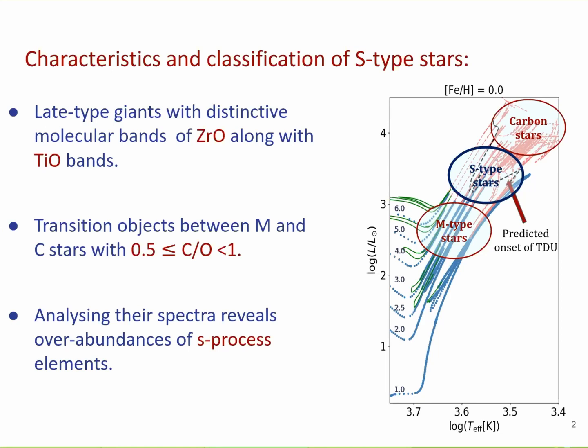All the spectra of S-stars reveal S-process abundances — the slow neutron capture nucleosynthesis — which happens in the interior of the AGB stars. So if we really want to understand the S-process or the AGB nucleosynthesis, we can use these S-stars as a probe.